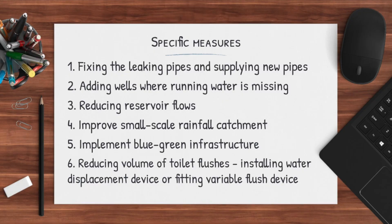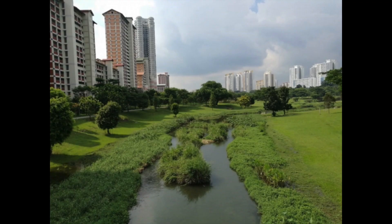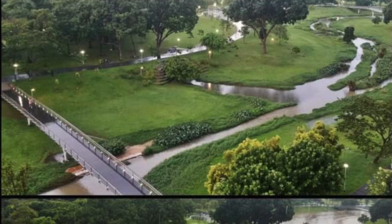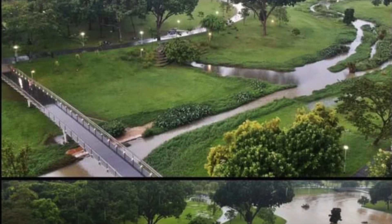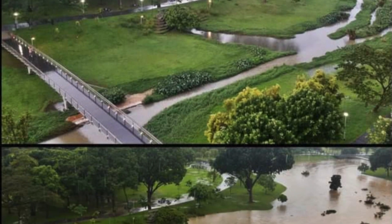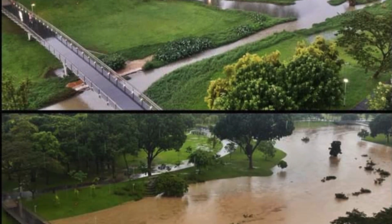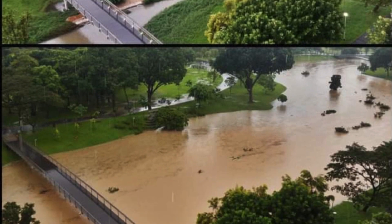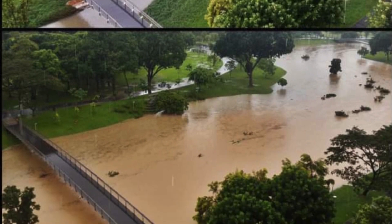We would also like to implement blue-green infrastructure, which essentially means integrating bodies of water or more elements of water into our development plans. This allows for more water retention, which in the end allows for less drought possibility.